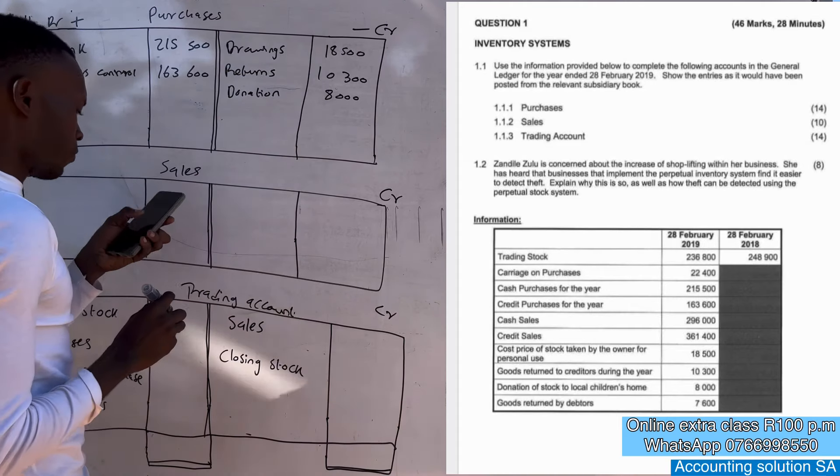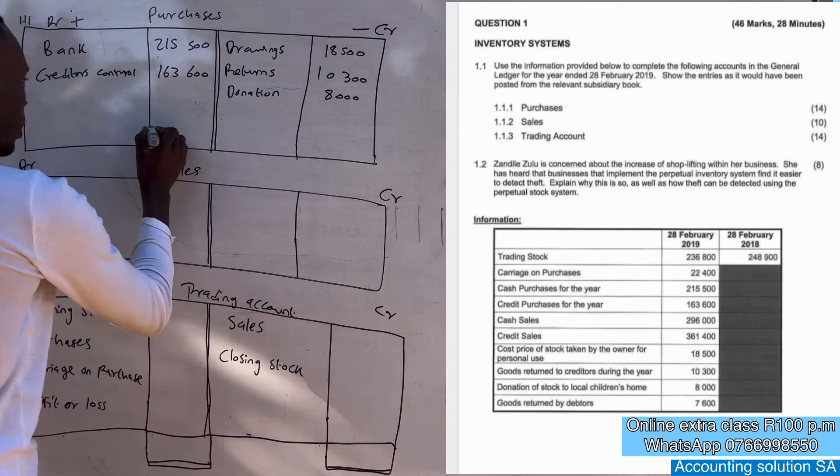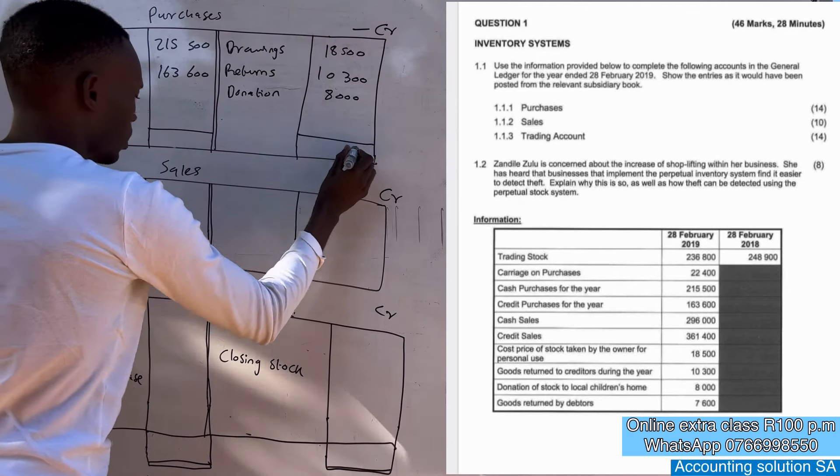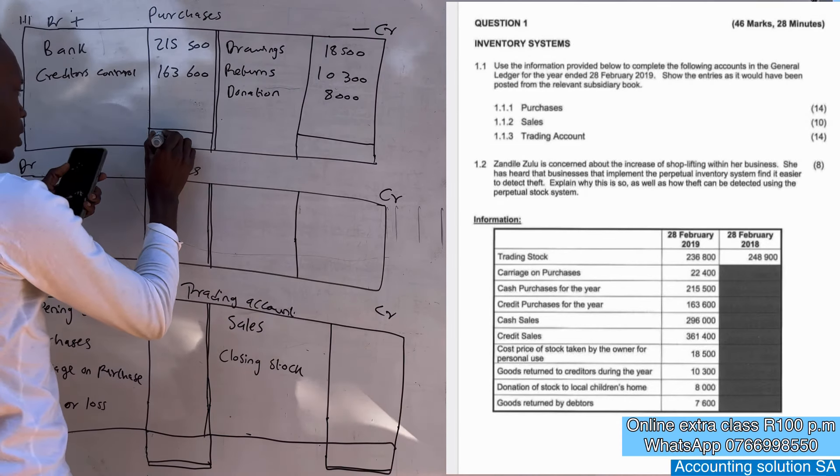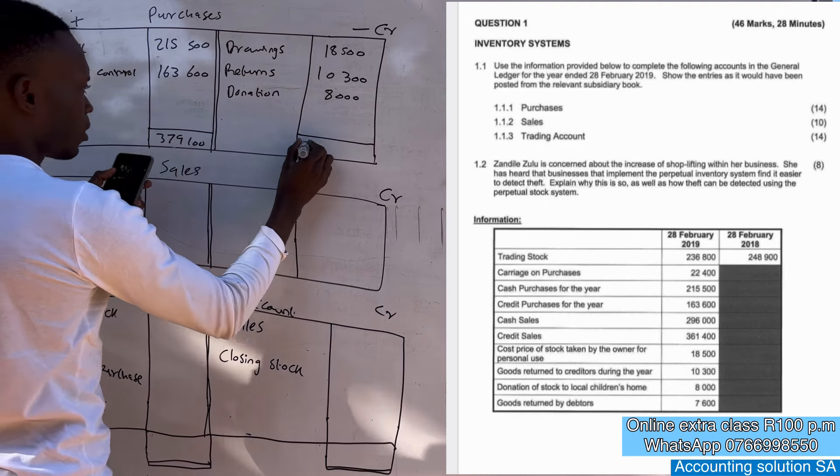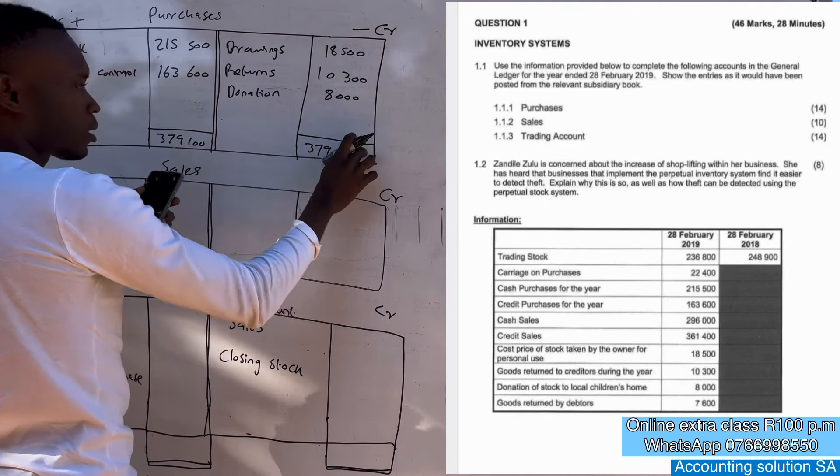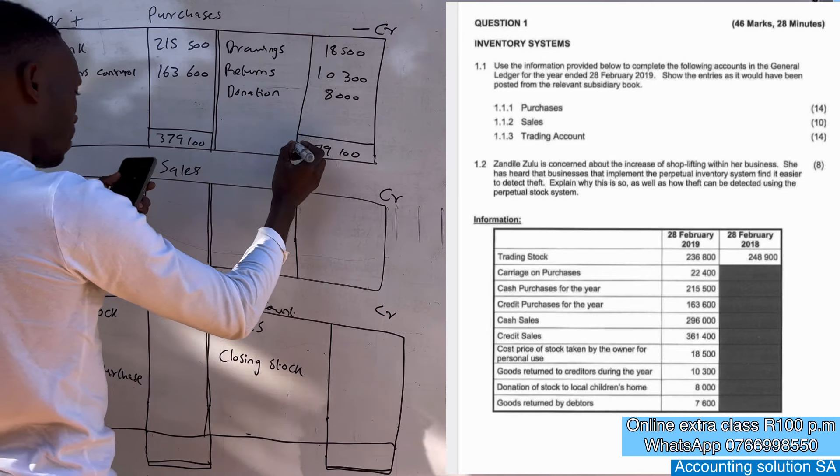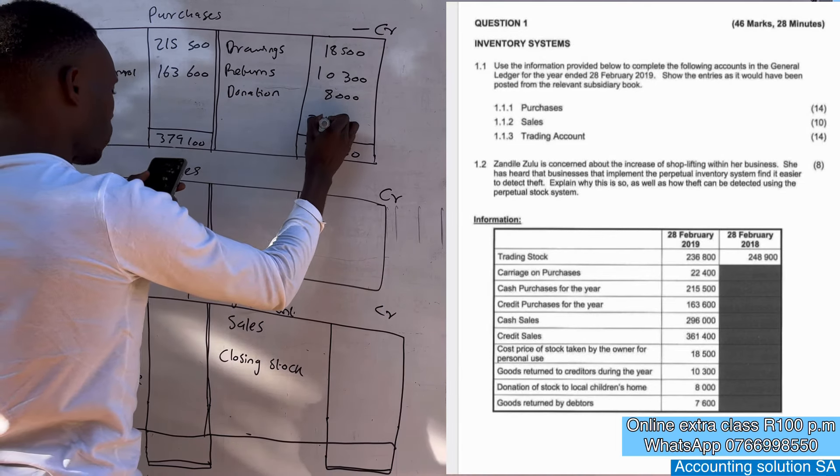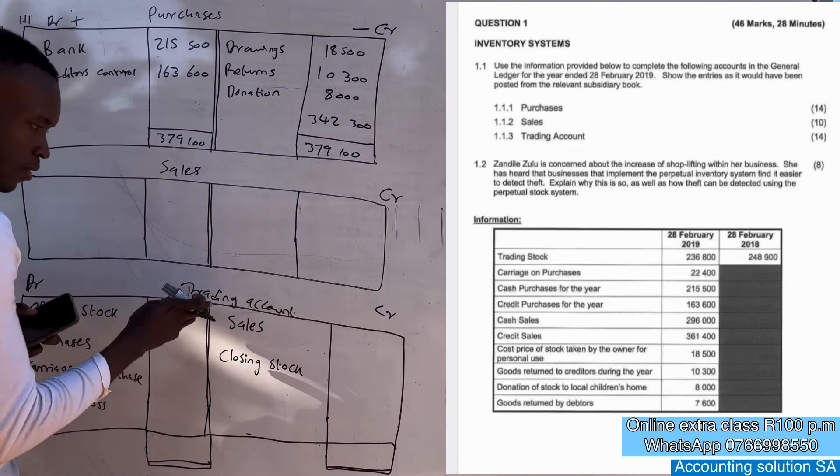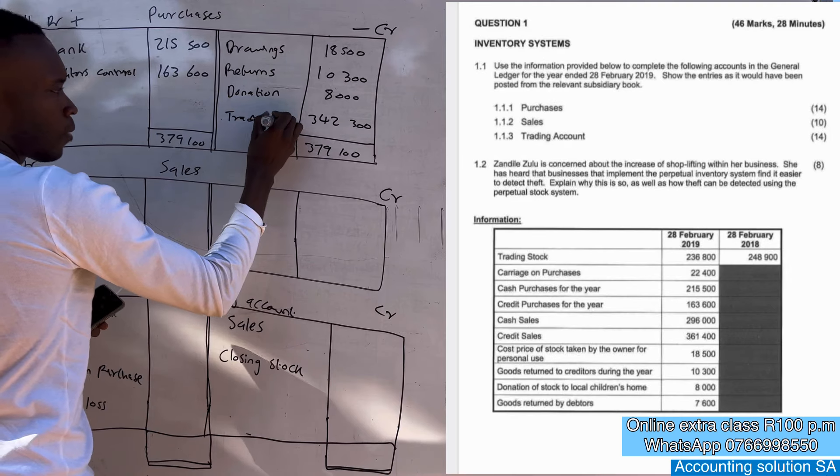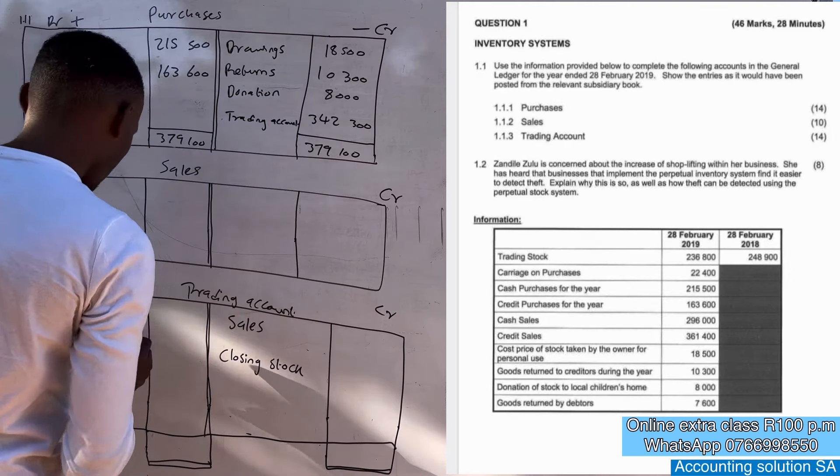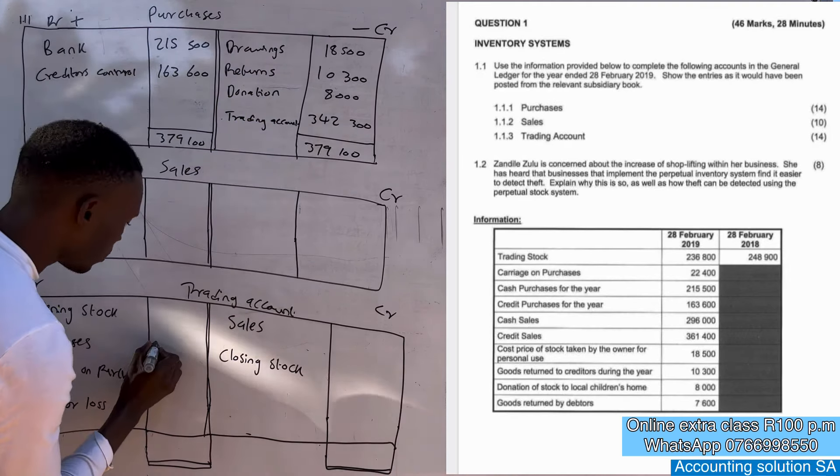Now we have to calculate the remaining purchase that we have so that we can transfer it here. This side is the higher which means that we have to calculate this side and get 379,100. Take this one and minus the rest then you will get 342,300 because we are transferring to trading account. We must name it trading account and it's going to be 342,300. Just like that we are done with this one.